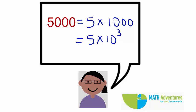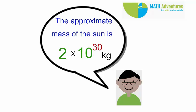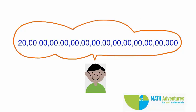Scientists and engineers like to write numbers this way. For example, the approximate mass of the sun is 2 into 10 power 30 kgs. It would be hard to write 2 with 30 zeros.